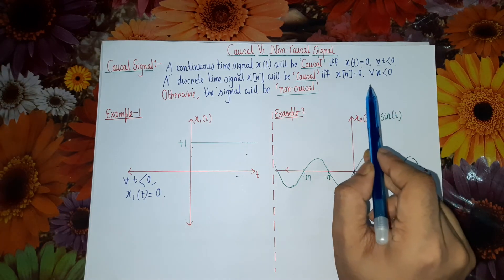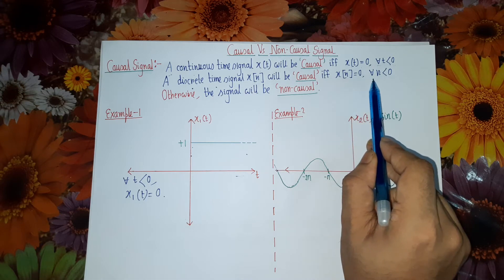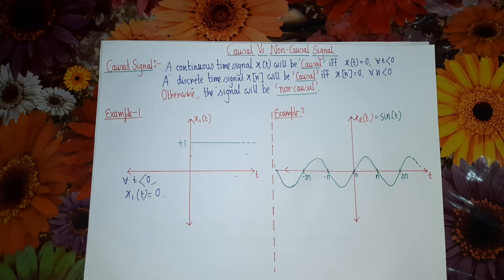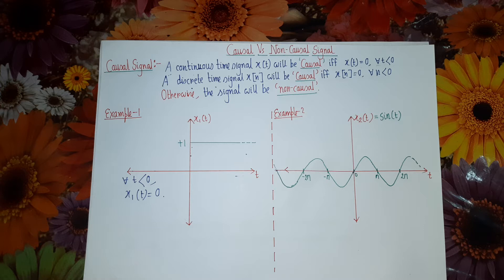For a discrete time causal signal also, the value of x(n) has to be 0 for all values of n less than 0. This means no portion of the waveform should lie in the left-hand side of the y-axis or in the negative time axis; the complete waveform should lie in the positive time axis. If some portion of the waveform lies in the left-hand side of the y-axis, then the signal is said to be a non-causal signal, be it continuous time or discrete time.